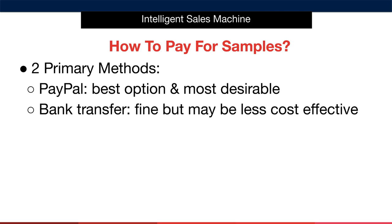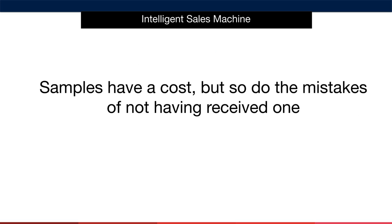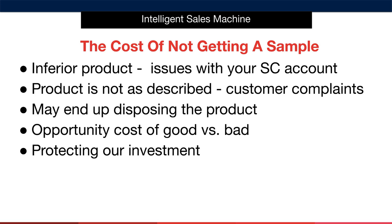Bank wires are secure once you've made certain that your supplier's details are 100% correct. Always be cautious, but not fearful when sending bank wires. Be aware of what you're doing, but don't be afraid to do it. Samples have a cost, but so too do the mistakes of not having received them. Let's talk about some of them, just to drive this point home and make certain that you never avoid this critical step. The first reason is, of course, importing and selling an inferior product. This quite simply is going to cause you issues with your Seller Central account. Seller Central is the place where you'll run your business on Amazon. It's not worth having a poor product drag your account down just because you didn't want to pay $50 or $100 for a sample.